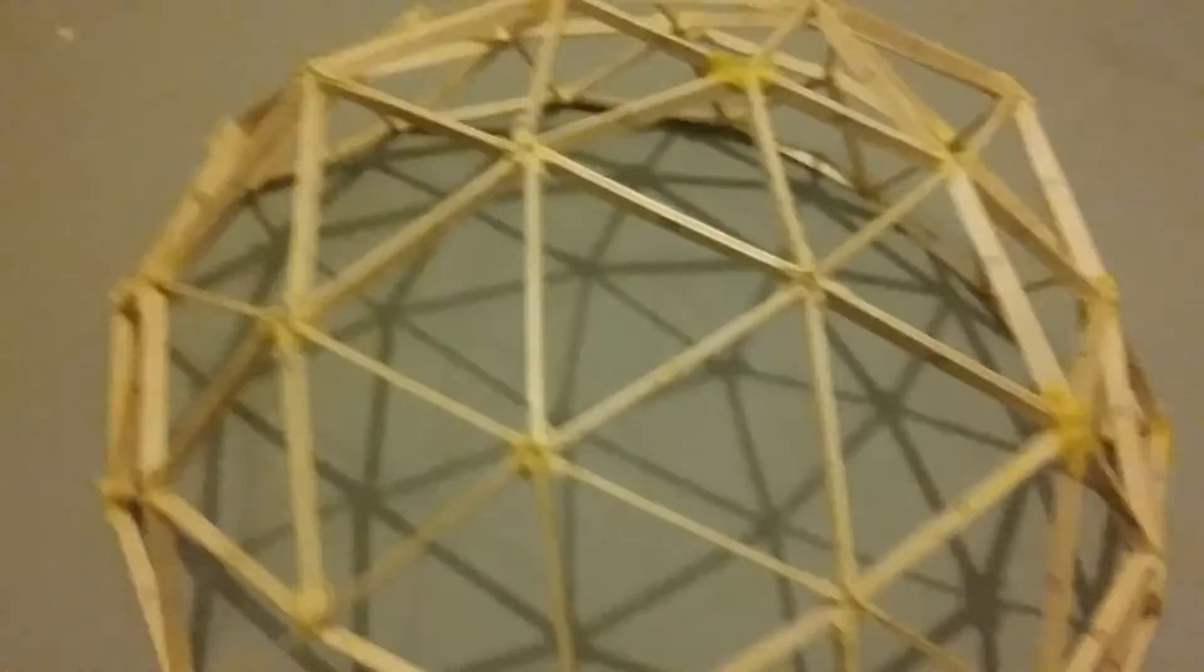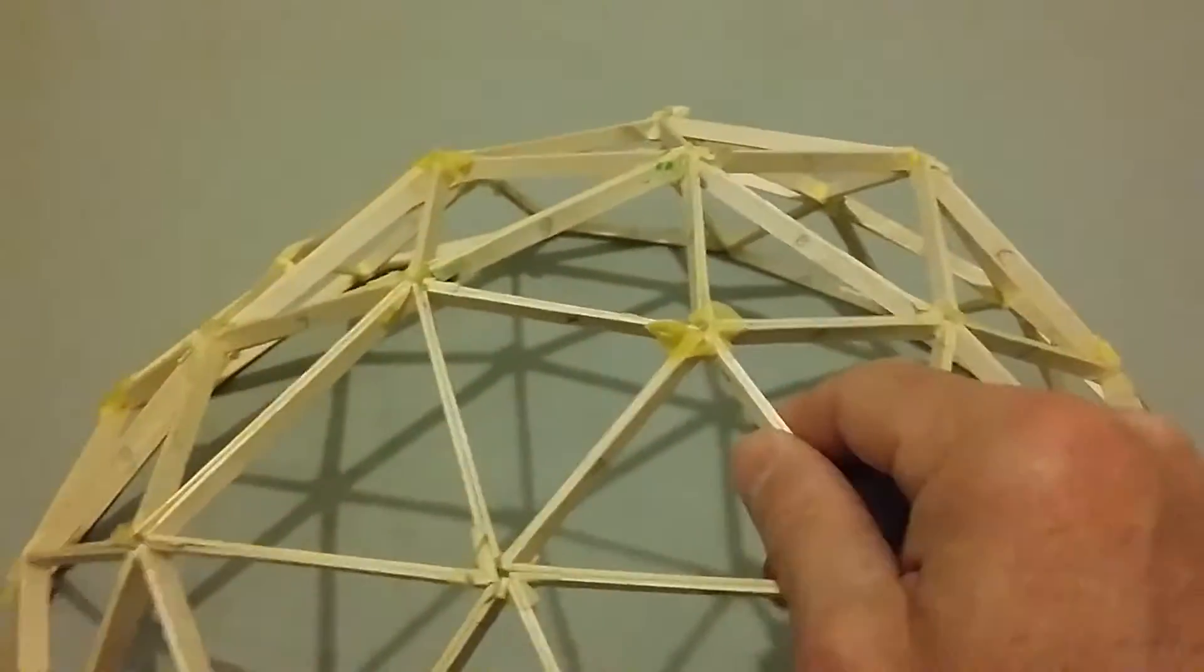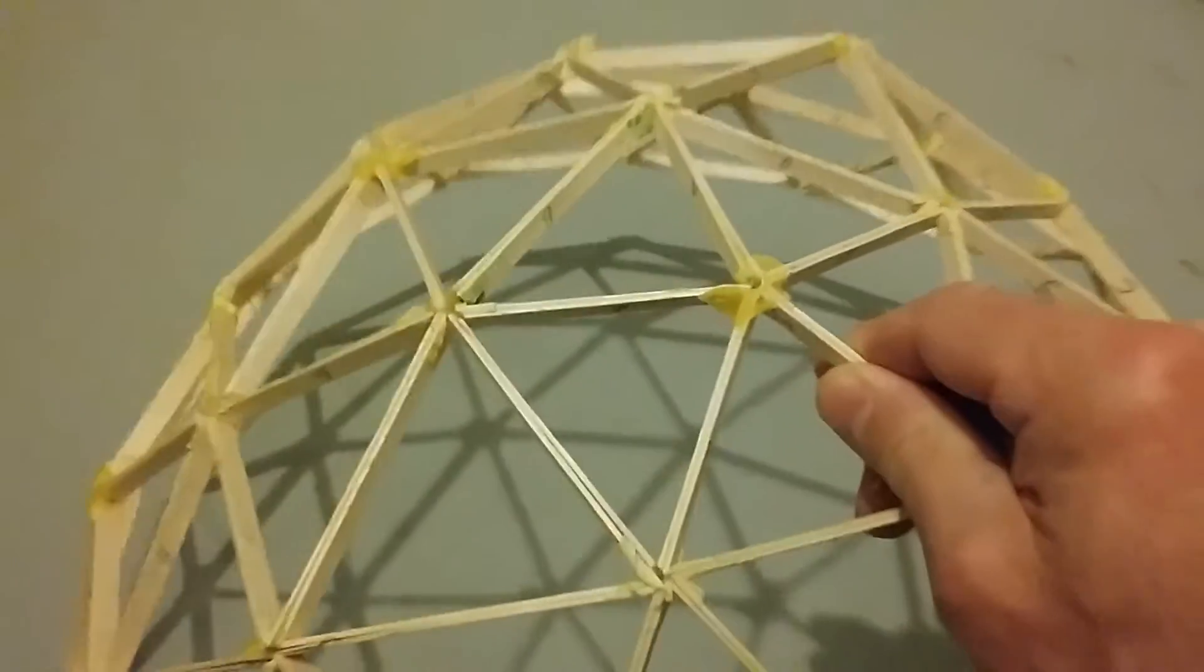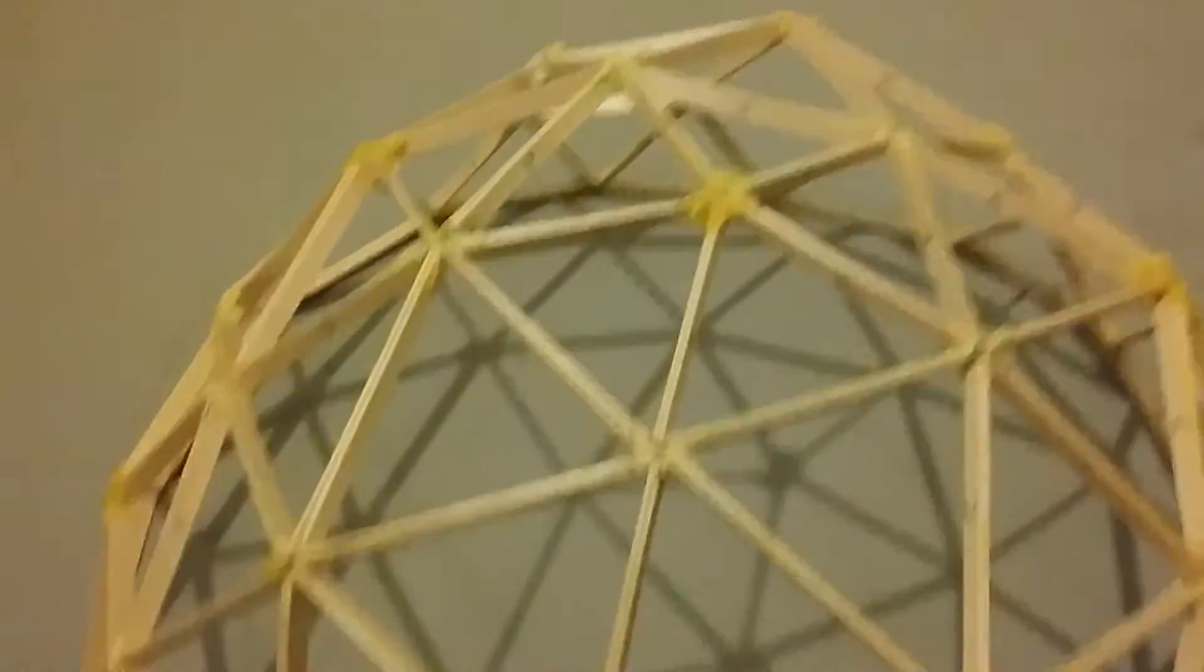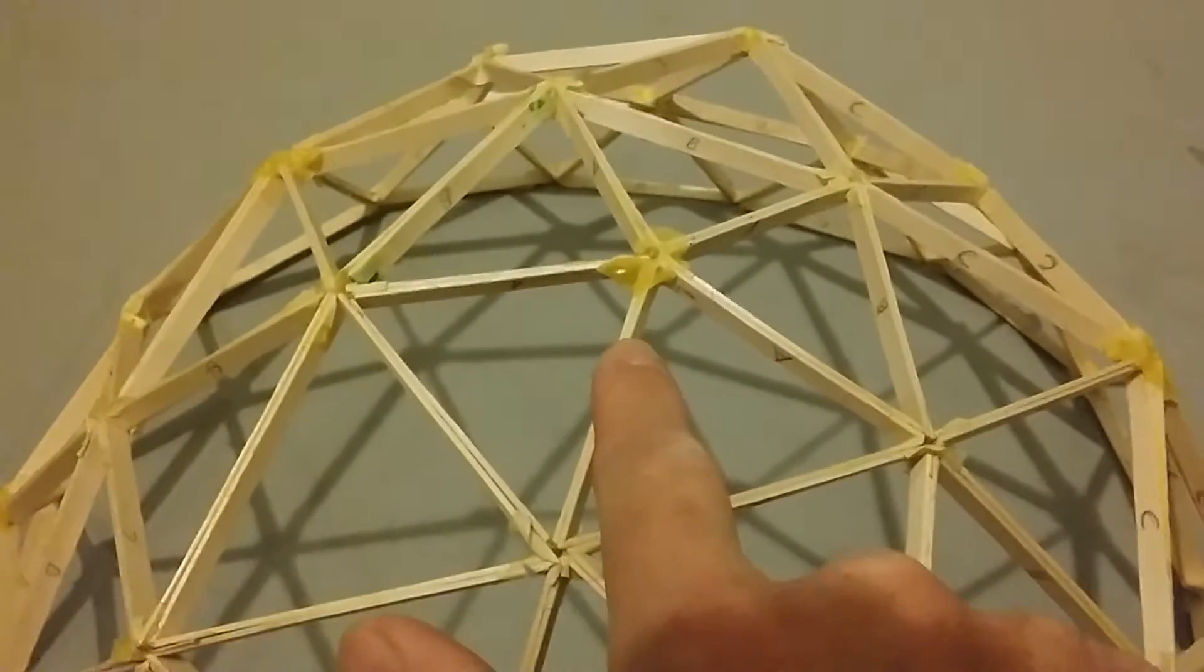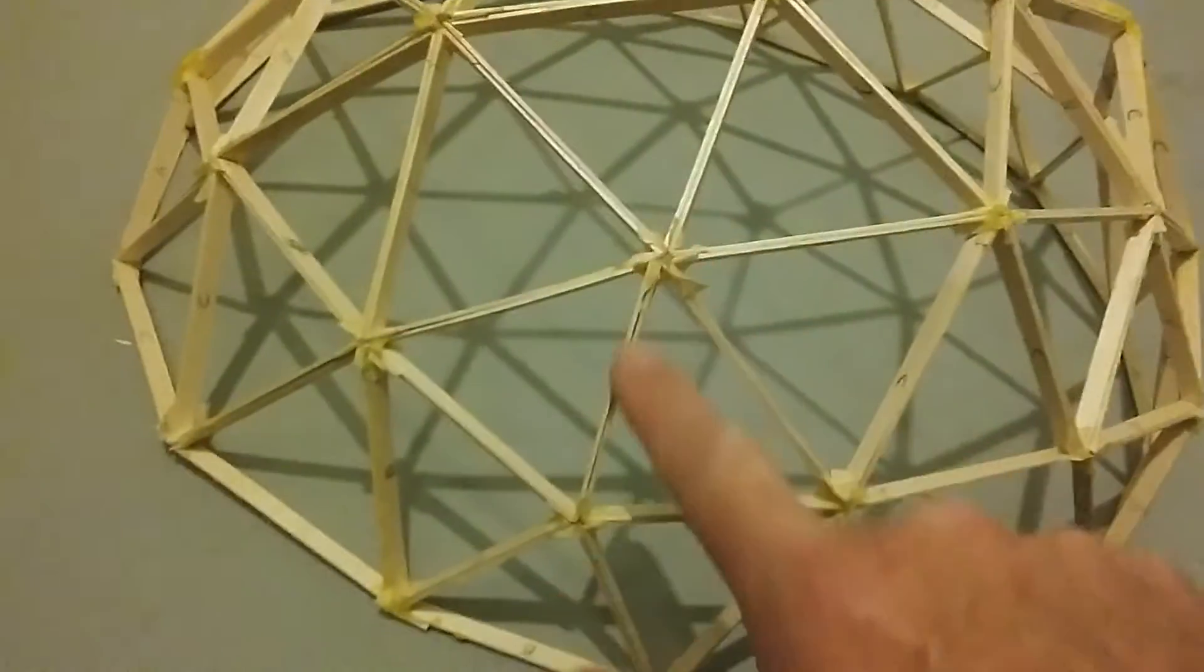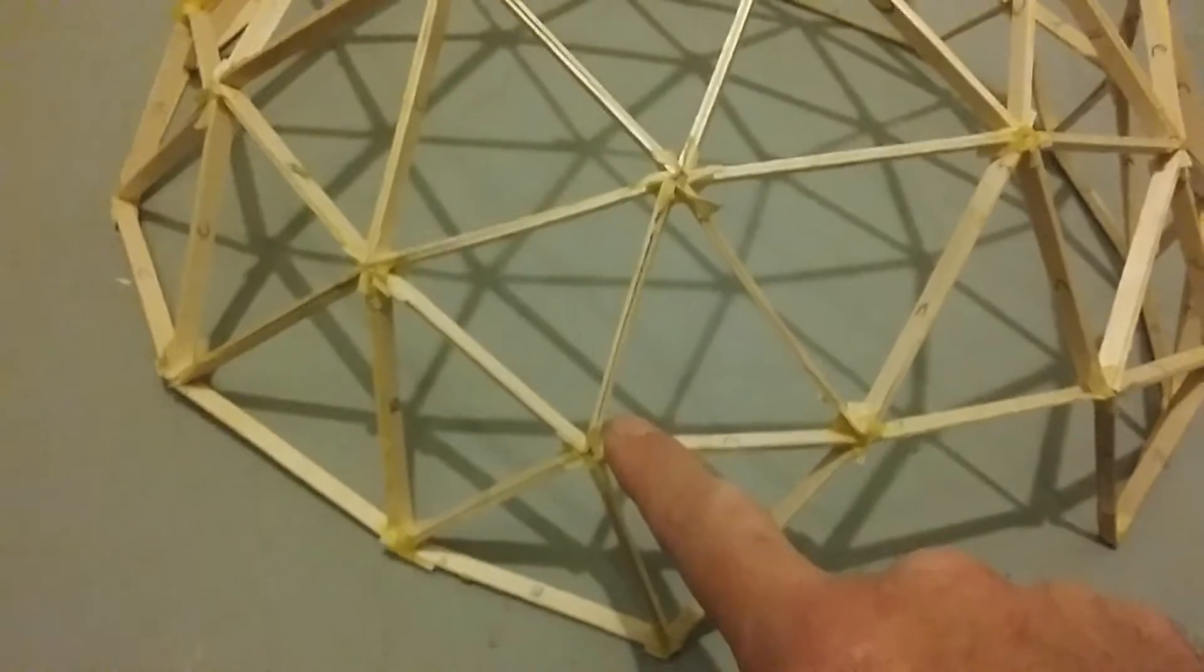What you get are hexagon shapes and pentagon shapes. When I say three-frequency of a dome, what I'm talking about is between each pentagon hub, I have one strut, two struts, three struts to the next pentagon.